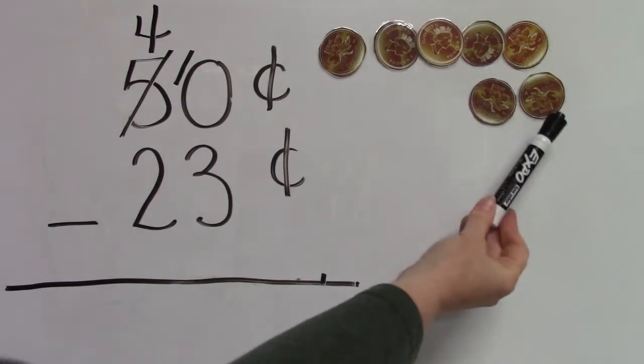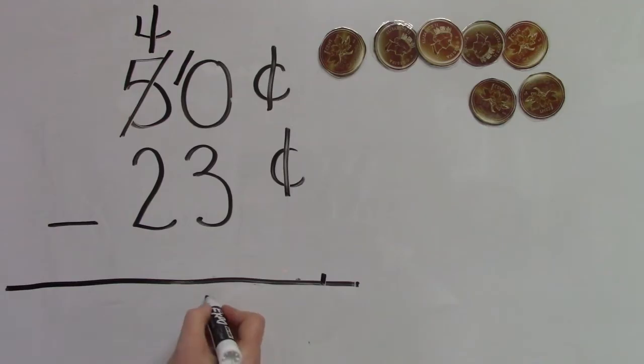One, two, three, four, five, six, seven. Ten take away three is seven.